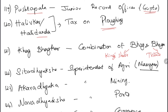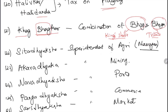Pushtapala were junior record officers during the Gupta period. Hali-kara or Hali-dhanda were taxes on plowing. Bhaga-bhogakara was a combined tax: Bhaga is the king's share and Bhoga is the tribute to the king. Sita-adhyaksha were superintendents of agriculture during the Mauryan period — 'Sita' always means agricultural land, which is why Rama's wife Sita was named so, as she was found in agricultural land. Akara-adhyaksha were superintendents of mining during the Mauryan period.